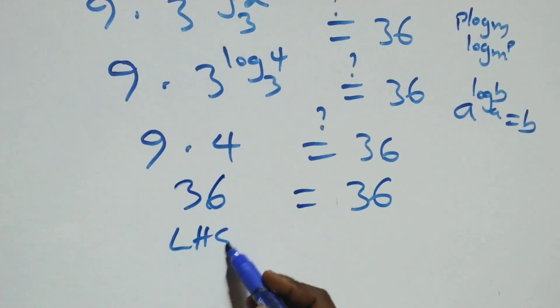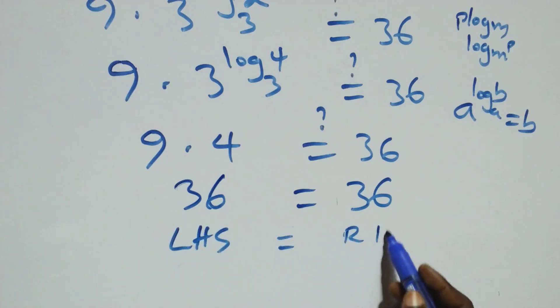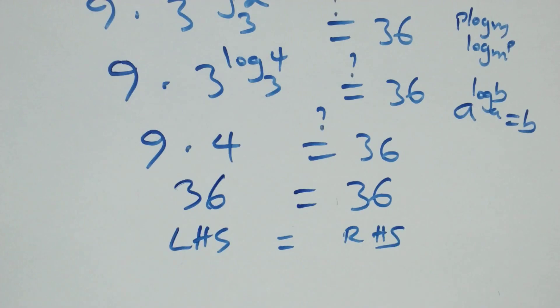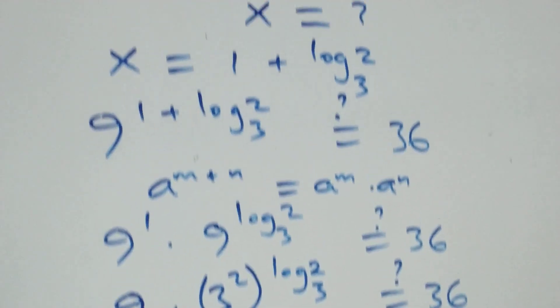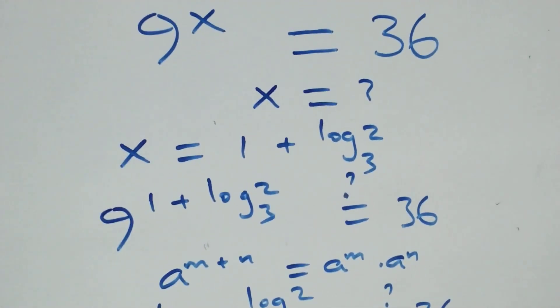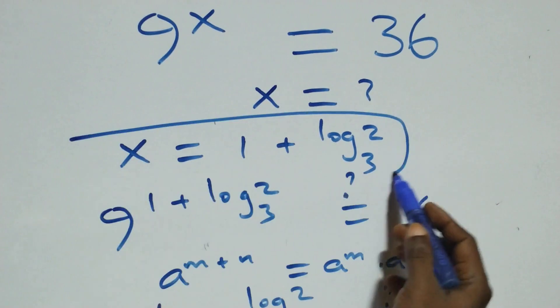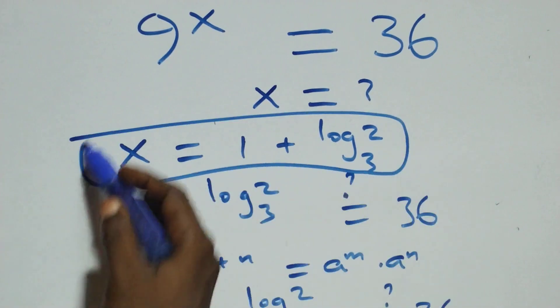The left-hand side equals the right-hand side, and therefore we conclude that x equals 1 plus log₃2 satisfies this given problem.